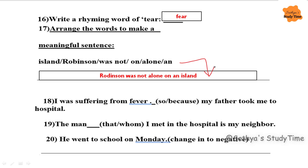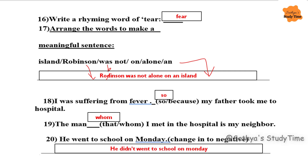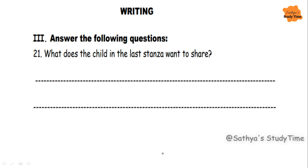Write a word for fear — it is 'fear'. Rearrange the words to make a meaningful sentence. The answer is Robinson — it is B, not D. Next: I was suffering from fever, so my father took me to hospital. The man whom I met in the hospital is my neighbor. He went to school on Monday — correction: he didn't went should be he didn't go to school on Monday.